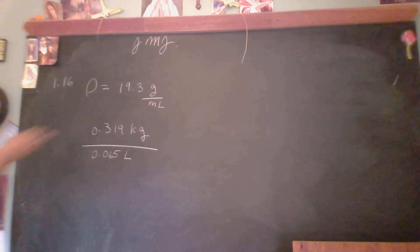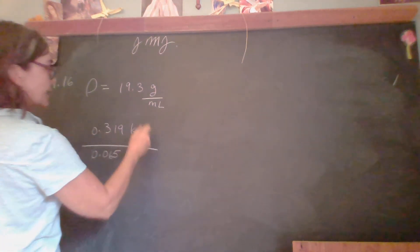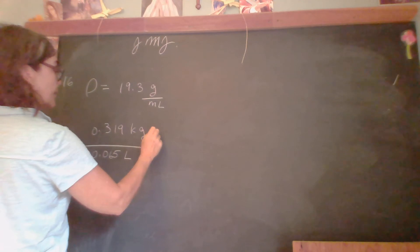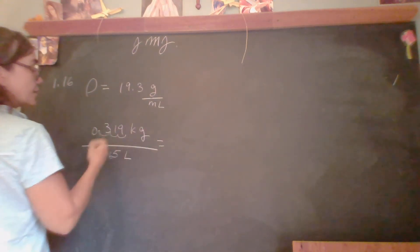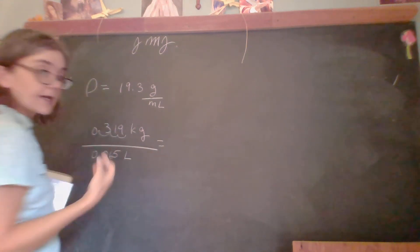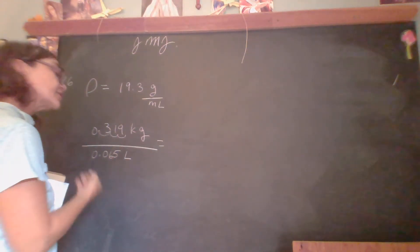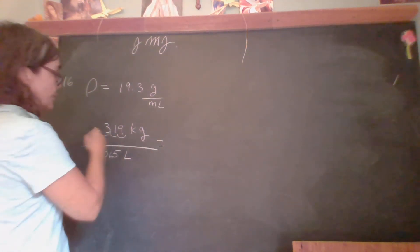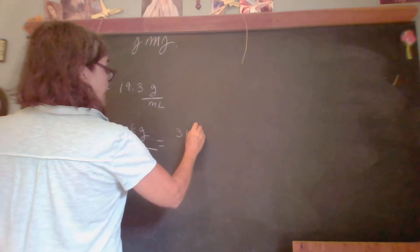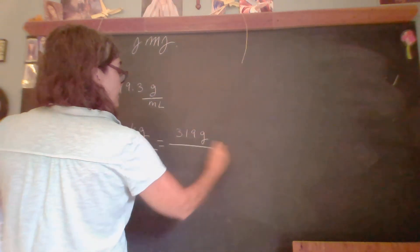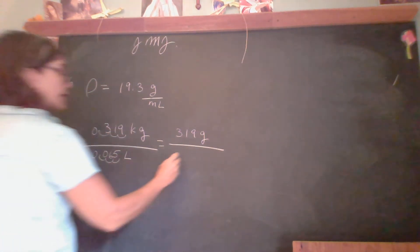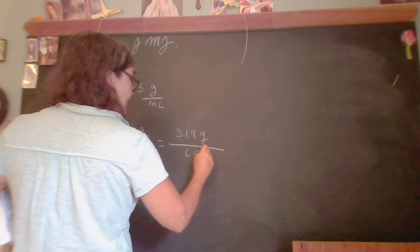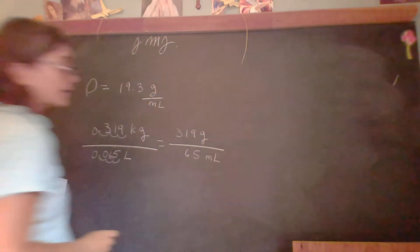Well, the kilograms, let's see what that will be in grams. I'm not writing it out at this point, just moving the decimal point. So that's 319 grams. And the liters to milliliters, same thing. So it's going to be 65 milliliters.